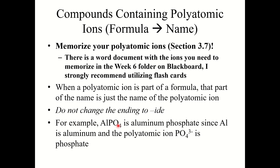For example, consider the formula AlPO4. Aluminum is the cation — just name it as it is in the periodic table: aluminum. PO4 is the anion; you need to know that PO4 is phosphate. So the name of this compound is simply aluminum phosphate. You just name the cation as it appears in the periodic table and name the polyatomic ion exactly as it is — no suffix changing is needed.